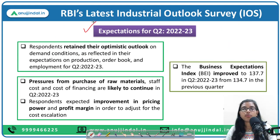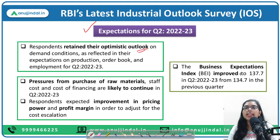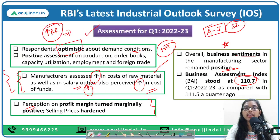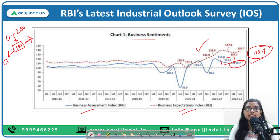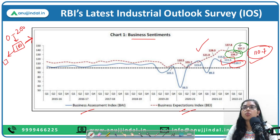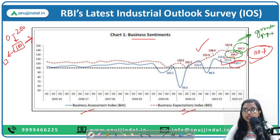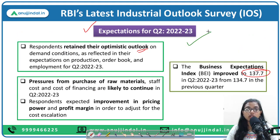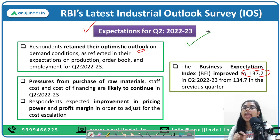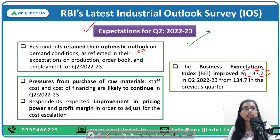The expectations for quarter 2 have been very optimistic by the manufacturers and companies, improving to 137.7 compared to 134.7 last time. That means our economy is moving towards growth and expansion. This improvement is expected because demand conditions are likely to further improve due to improvement in agricultural produce, driven by the good monsoon we are receiving.